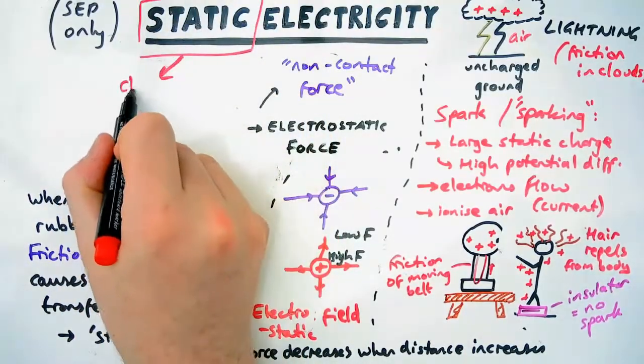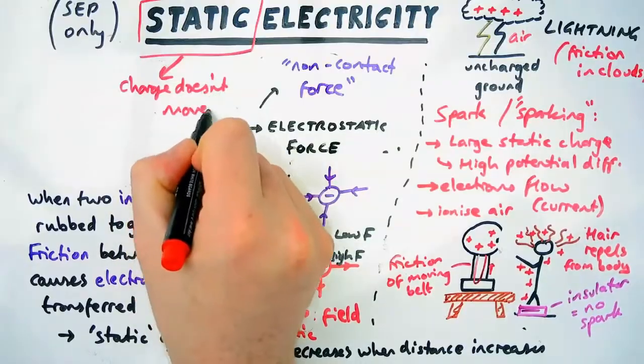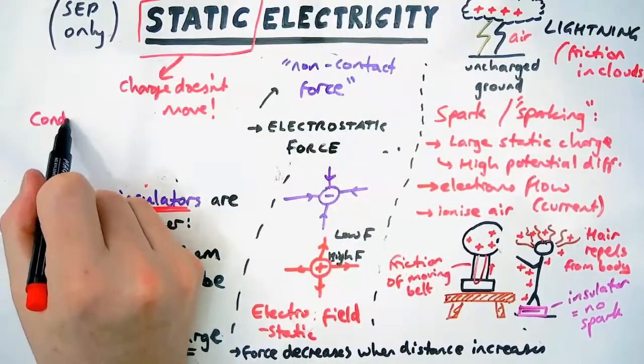Now, to finish off, let's talk about static electricity. Why is it called static? Well, static means something doesn't move. In this case, the charge isn't moving.